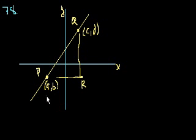And then they say in the figure above, segments p, r, and q, r. So p, r, and q, r. Let me draw that out a little bit better. p, r, and q, r are each parallel to one of the rectangular coordinate axes. OK, fair enough. This is parallel to the y-axis. p, r is parallel to the x-axis. Fair enough.